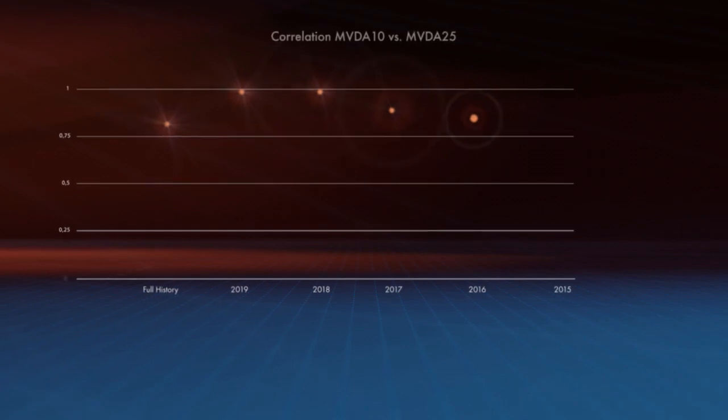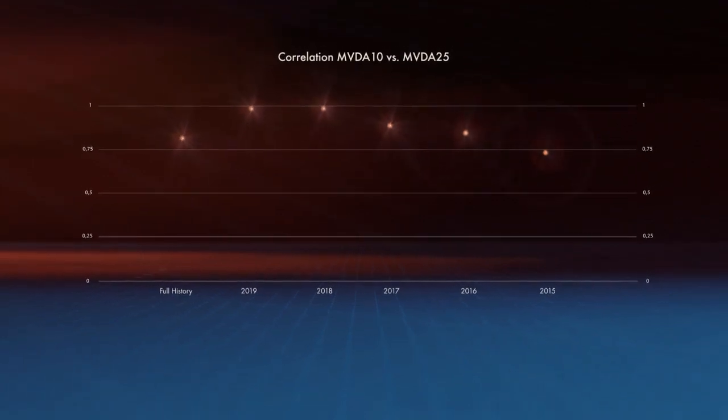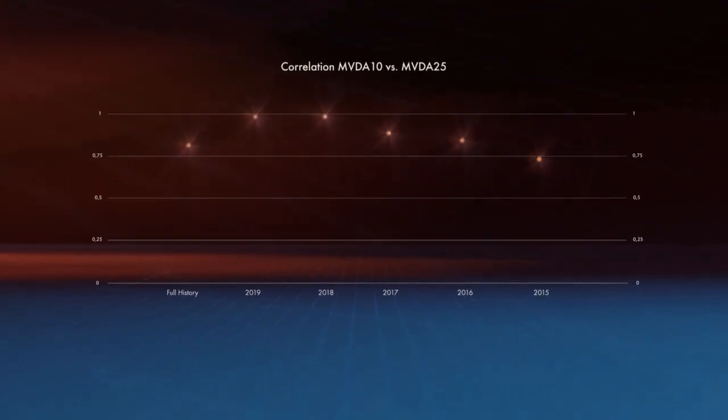The two indices show a high correlation with each other, indicating that they generally move up and down together. This is due to the fact that both include and assign a big weight to the largest digital assets such as Bitcoin and Ether.